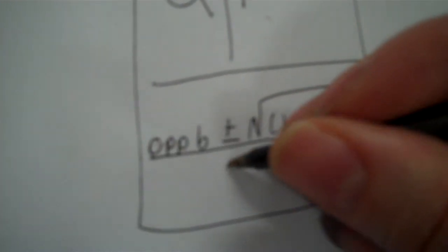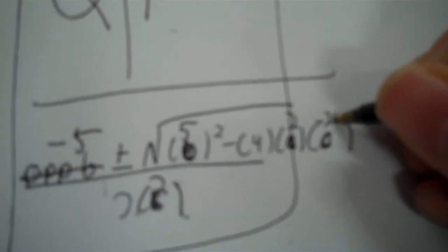Quadratic formula: opposite of B, plus or minus the square root of B squared minus 4AC, all over 2A. The opposite of plus 5 is negative 5, and A is 2, so 2 times 2 is 4. B is 5, 4A is 2, and C is negative 240.